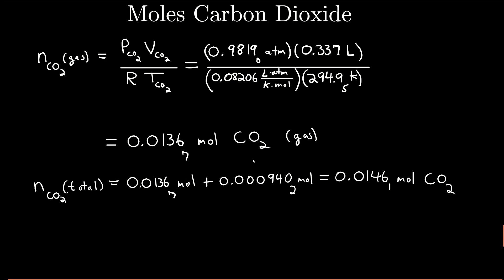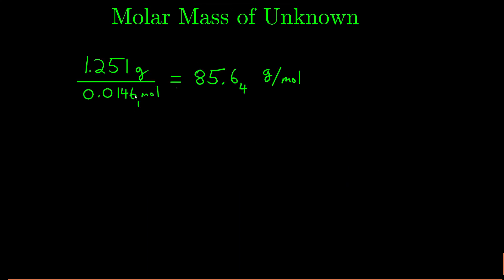Where we're going with this is we want to calculate the molar mass of our unknown, assuming the moles of our unknown is the same as the moles of carbon dioxide. So we had to take into account not just the moles of carbon dioxide in the gas phase, but the moles of carbon dioxide that were in the solution. The total moles of carbon dioxide given off by the reaction was the moles in the gas phase plus the moles in the solution. This isn't a very big number, but within the number of significant figures we have — four past the decimal — it matters. Now we know how many moles of carbon dioxide were given off, which means we know how many moles of our unknown we had. So all we do to find the molar mass of our unknown is take the grams of our unknown — what we weighed in the beginning — divided by the moles, and there we go.